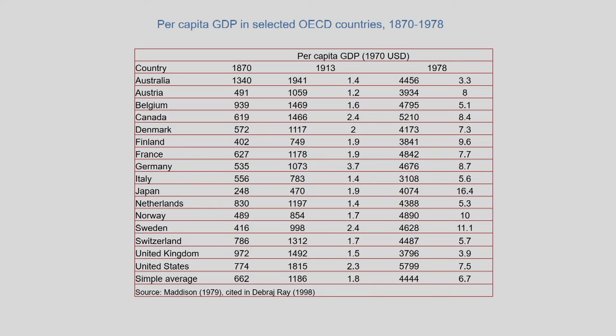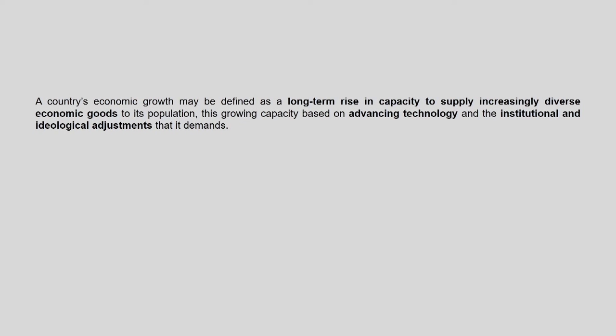This raises the question: what are the drivers of such modern economic growth? Various models have been developed by economists. In this lecture, we will focus on the points Professor Simon Kuznets made regarding the emerging characteristics of industrialized developed nations that had experienced modern economic growth, with particular reference to his pioneering paper 'Modern Economic Growth: Findings and Reflections,' published in the American Economic Review in 1973.